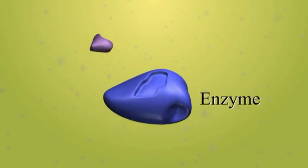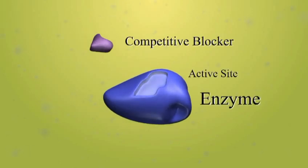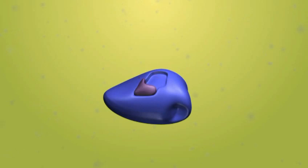Competitive inhibition occurs when an enzyme encounters a blocker which mimics the properties of the substrate and binds to the enzyme's active site. Thus, when the substrate is encountered, the active site is not available for attachment and no reaction will occur.